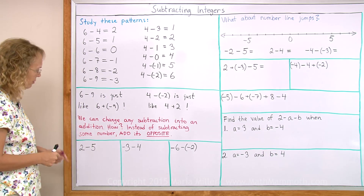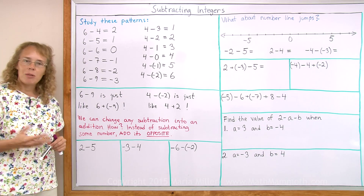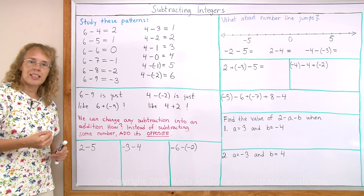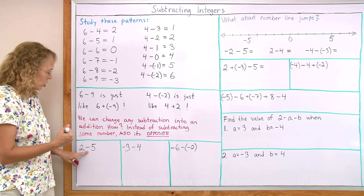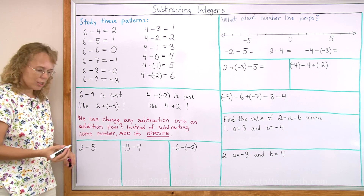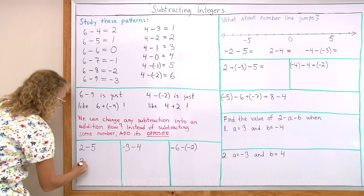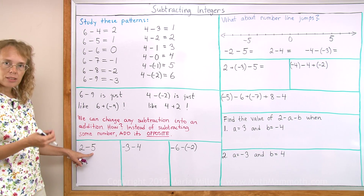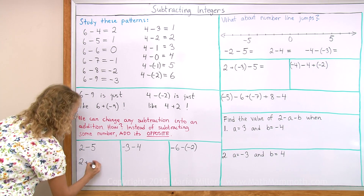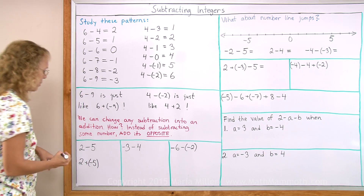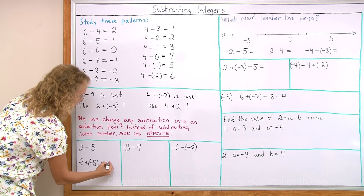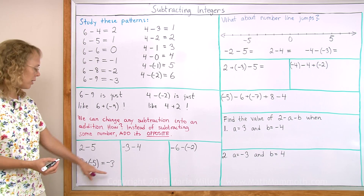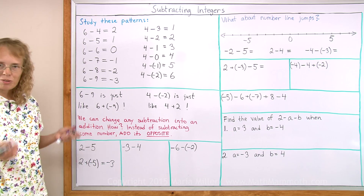Let's try it here. 2 minus 5 — maybe you already know the answer. But if I want to practice writing this as an addition, how to change the subtraction into an addition, I write 2 plus. And then this 5 changes into its opposite, negative 5. So I add some negatives. The answer is then negative 3 — there are more negatives; negatives win by 3 points.